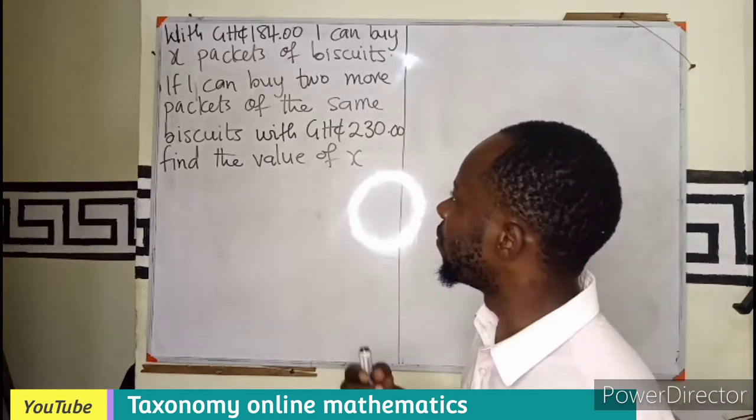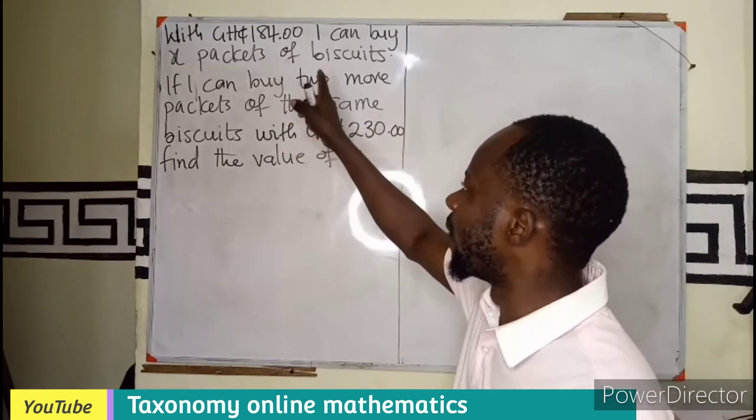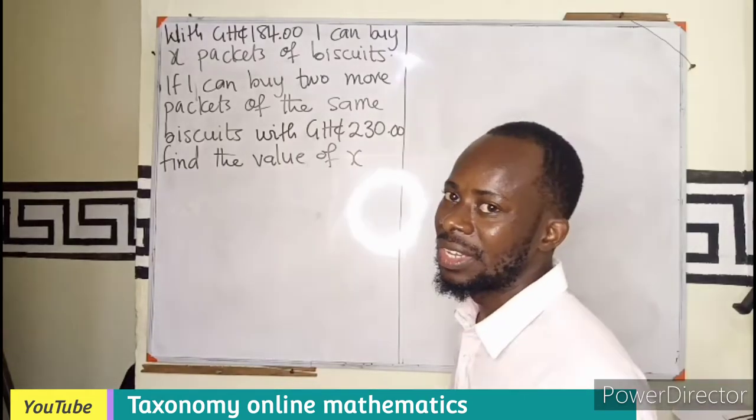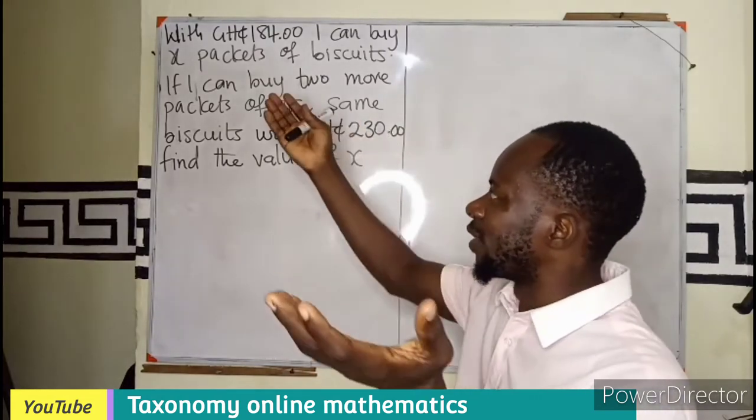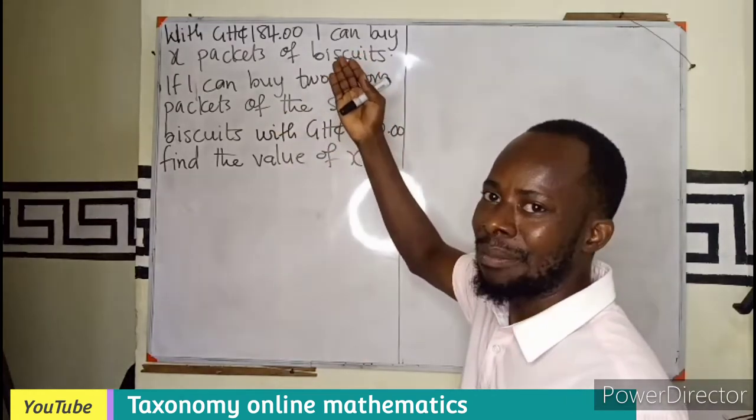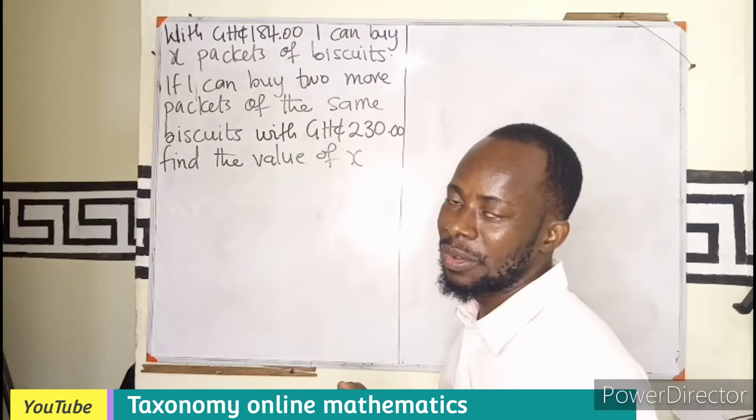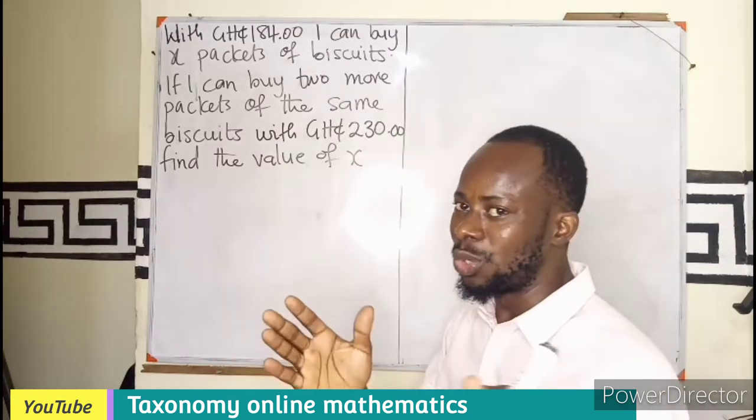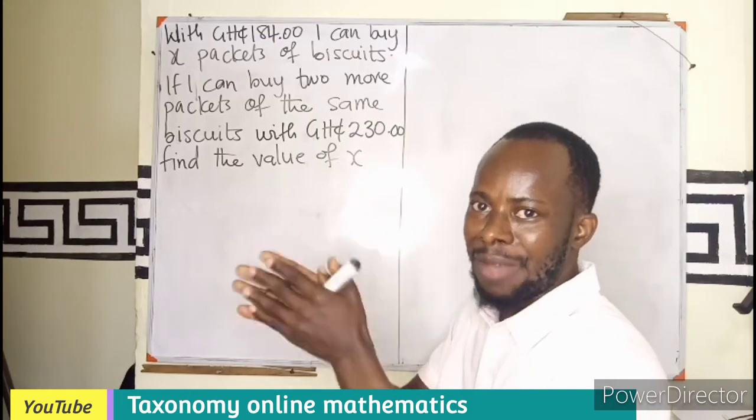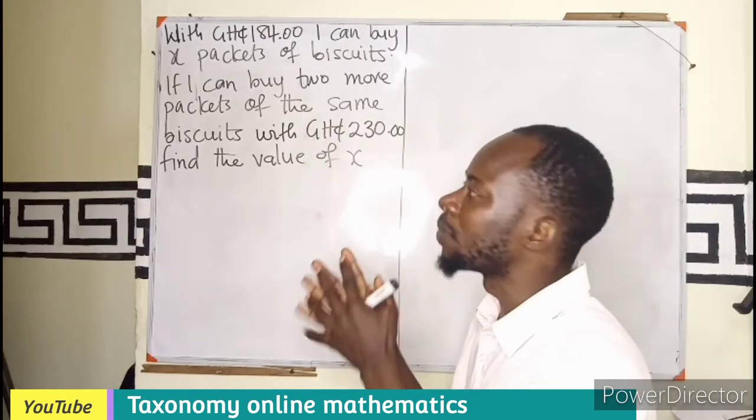So if I want to find total number of biscuits, that is X. And that X is giving me an amount of 184. Then that is the ratio. 184 is to X number of packets of biscuits.